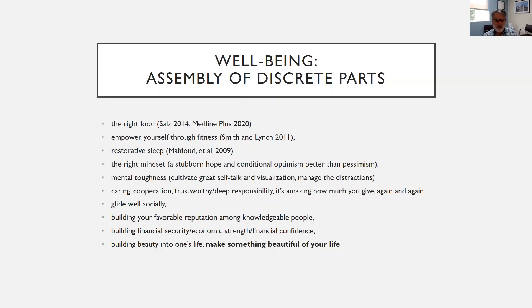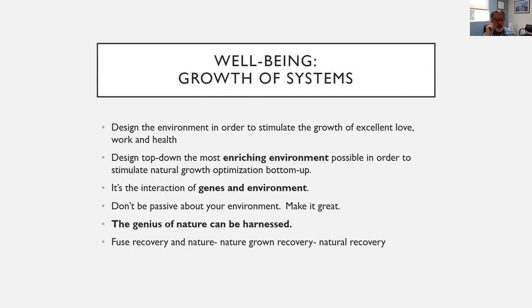The assembly of discrete parts includes: the right food, empowering yourself through fitness, restorative sleep, the right mindset — stubborn hope or conditional optimism is better than pessimism. Mental toughness involves great self-talk and visualization and managing distractions. Caring and cooperation, being trustworthy, having deep responsibility, and being a giving person. Gliding well socially, building a favorable reputation among knowledgeable people, building financial security and economic strength, and building beauty into your life — all these are part of the assembly of discrete parts.